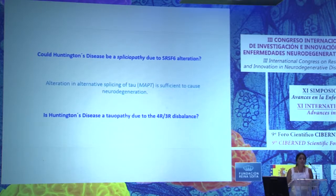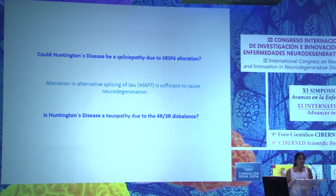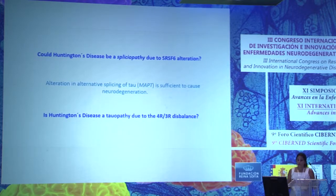Since alteration in alternative splicing of tau is sufficient to cause neurodegeneration, could Huntington's disease be a tauopathy due to the 4R/3R disbalance?